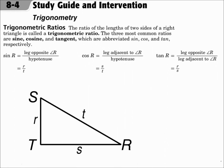This is lesson 8.4 Trigonometry. Your objectives are to find trigonometric ratios using right triangles and to use trigonometric ratios to find angle measures in right triangles.